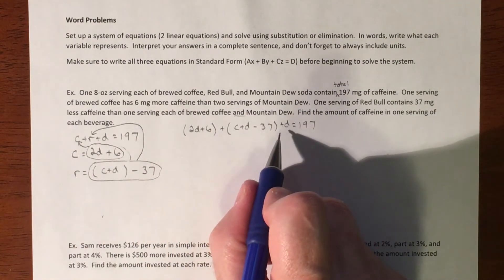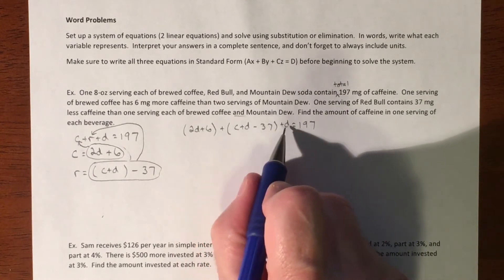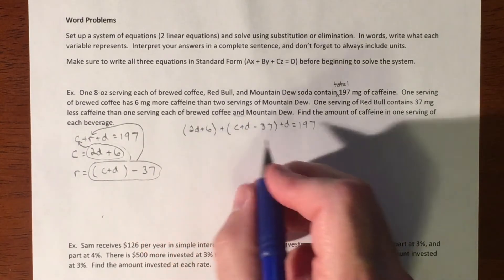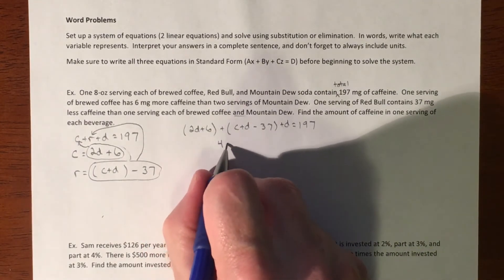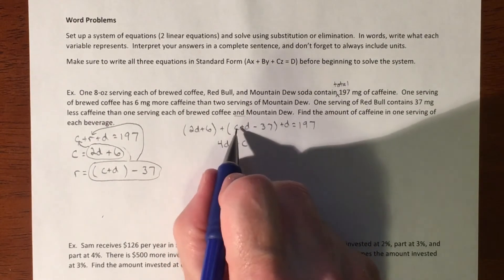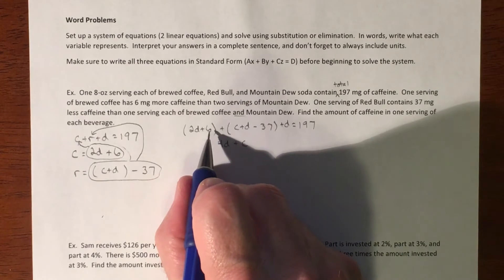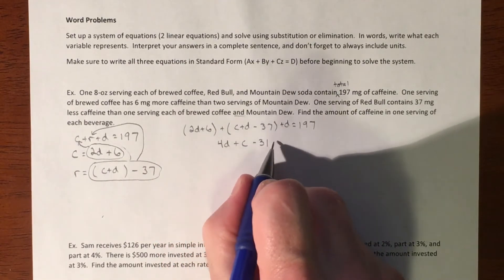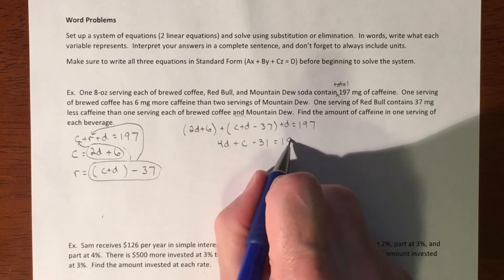So let's just put together what we can and then we're going to be able to replace C one more time, but we'll do that in a second. So we have, let's see, we got a D, D and a 2D, so that is 4D, plus C and then a 37 and the six can go together. So that's a minus 31 and that's going to equal 197.